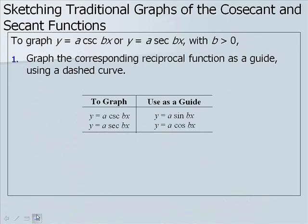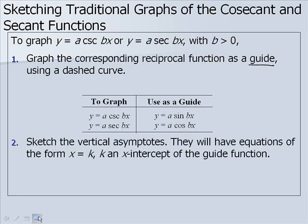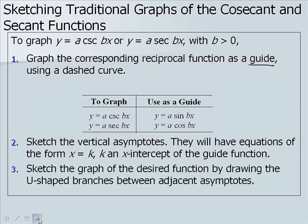To sketch the graphs of cosecant and secant, first graph the corresponding reciprocal function as a guide — we call it the guide function. To graph y equals cosecant, we use sine as the guide; to graph secant, we use cosine. Second, sketch the vertical asymptotes, which have equations of the form x equals k, where k is an x-intercept of the guide function. Third, sketch the graph by drawing u-shaped branches between adjacent asymptotes.